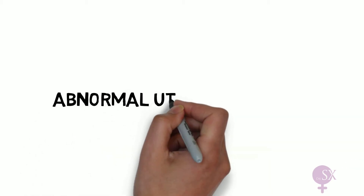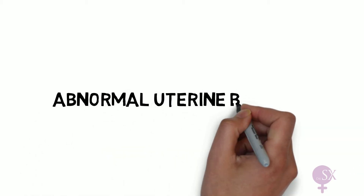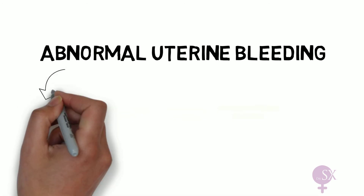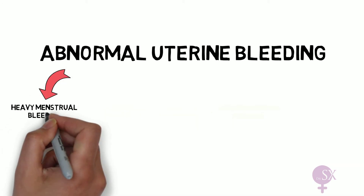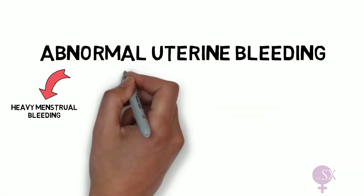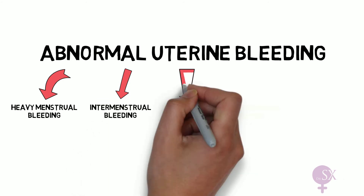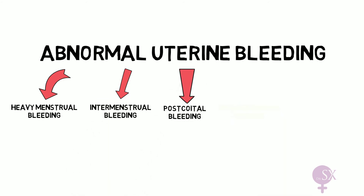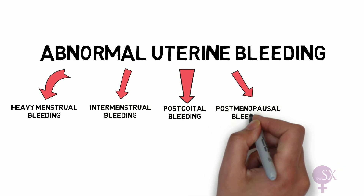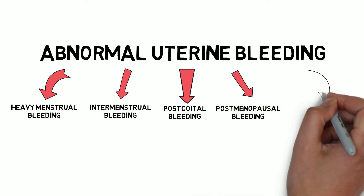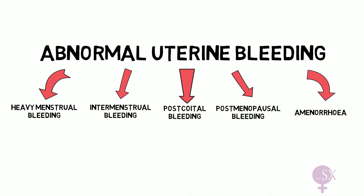This is the second video on abnormal uterine bleeding. As a recap, we have different types of abnormal bleeding, namely heavy menstrual bleeding, intermenstrual bleeding, post-coital bleeding, postmenopausal bleeding, and amenorrhea. In this video, I'm going to be talking about IMB, PCB, and PMB for short.